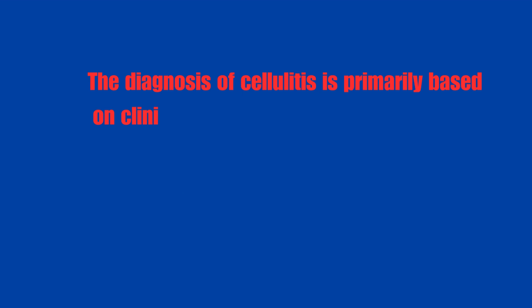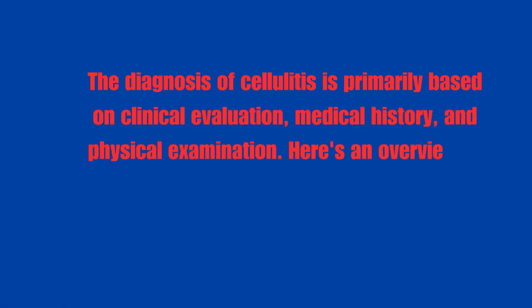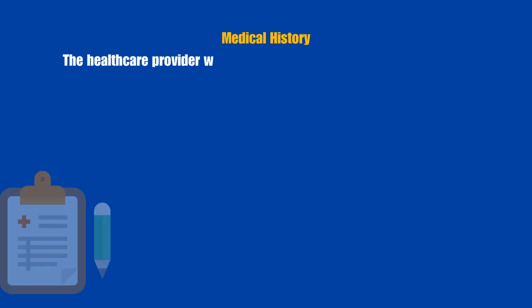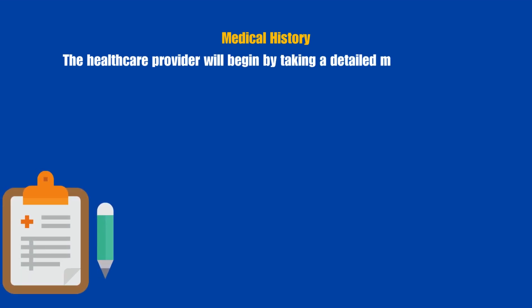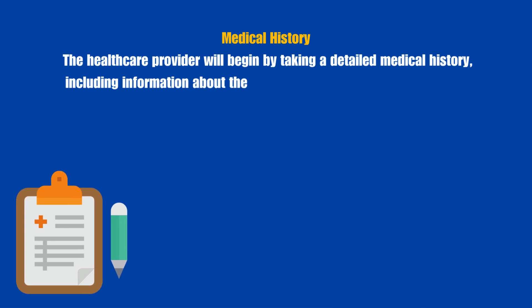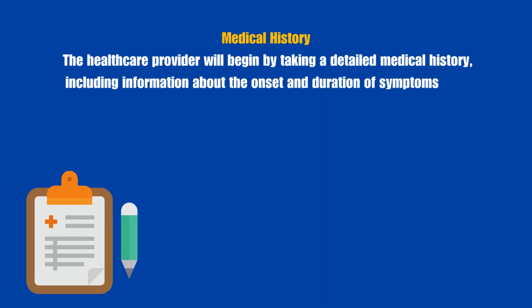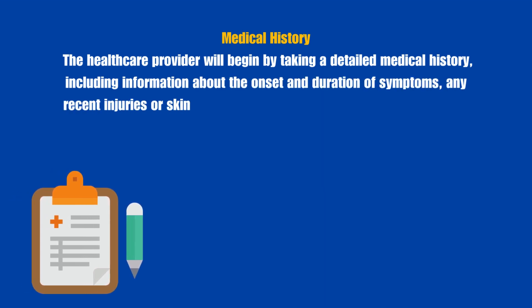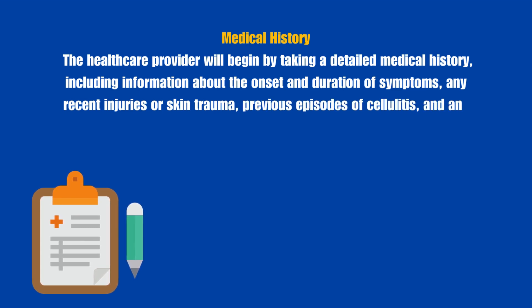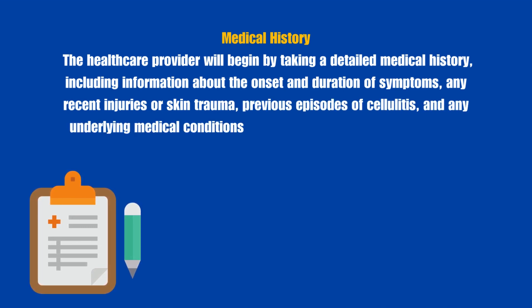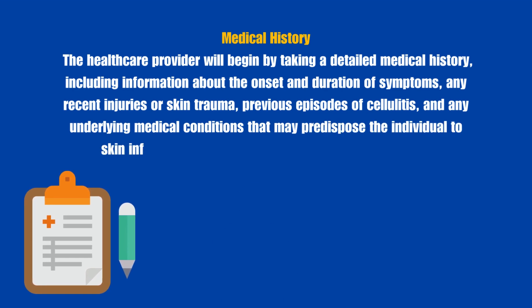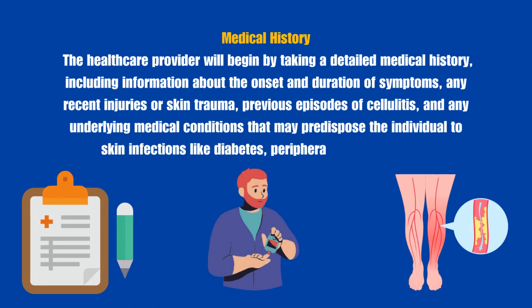The diagnosis of cellulitis is primarily based on clinical evaluation, medical history, and physical examination. Medical history: The healthcare provider will begin by taking a detailed medical history, including information about the onset and duration of symptoms, any recent injuries or skin trauma, previous episodes of cellulitis, and any underlying medical conditions that may predispose the individual to skin infections like diabetes or peripheral vascular disease.